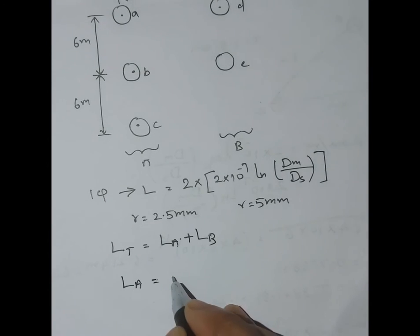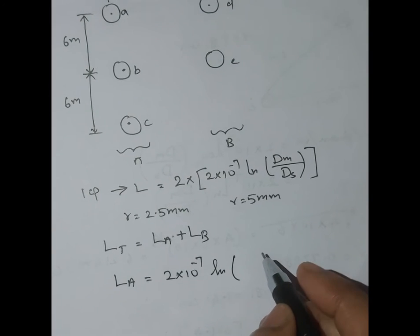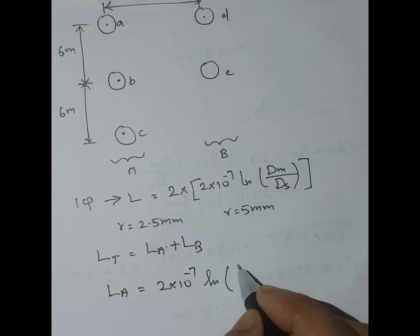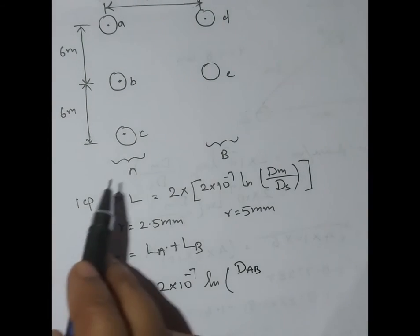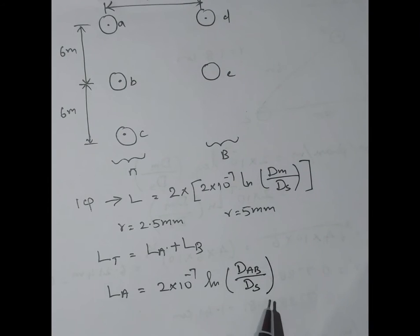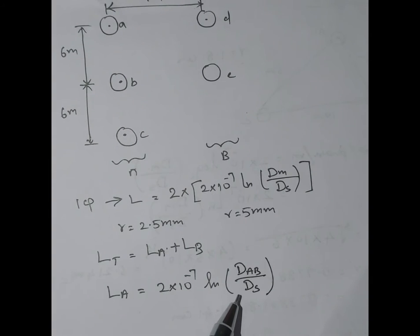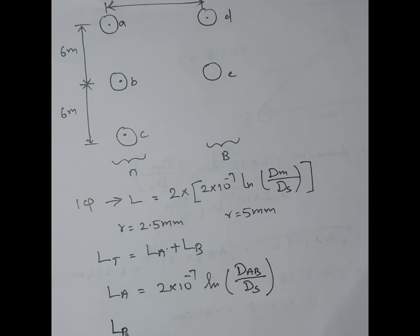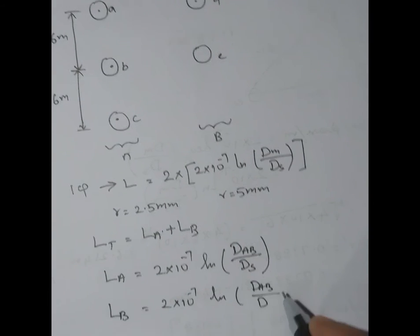La is 2 × 10⁻⁷ ln(Dm/Ds), where Dm here is the mutual geometrical distance Dab between the two phases A and B, divided by Ds. We use Ds because we are having more than one conductor per phase. Similarly, Lb is 2 × 10⁻⁷ ln(Dab/Ds).